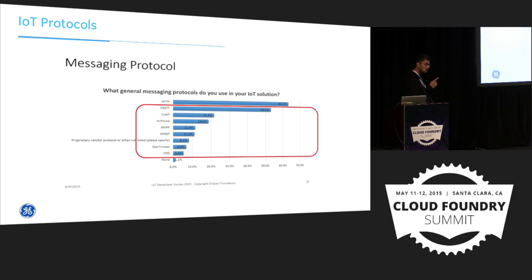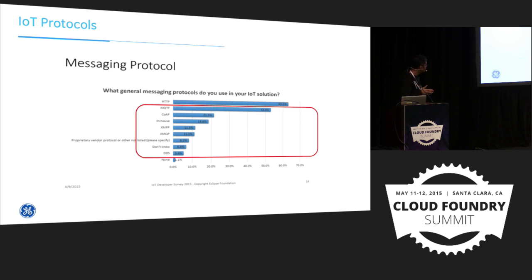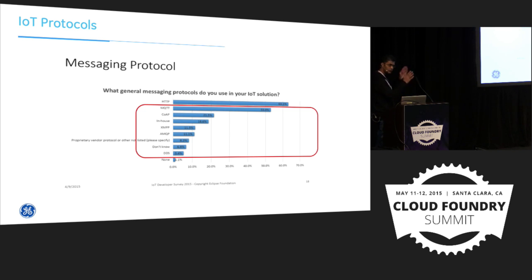In an IoT use case, HTTP has certain drawbacks. HTTP has large overheads, doesn't offer QoS, is not very well suited for large payloads, and doesn't offer sticky sessions. Those are various disadvantages when you consider HTTP from an IoT perspective.